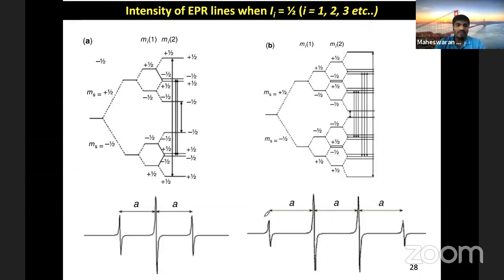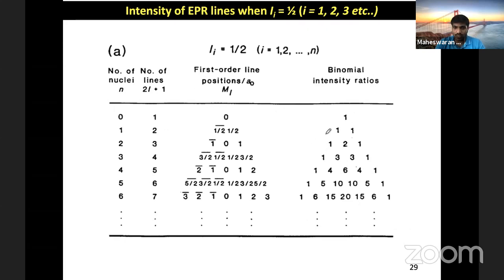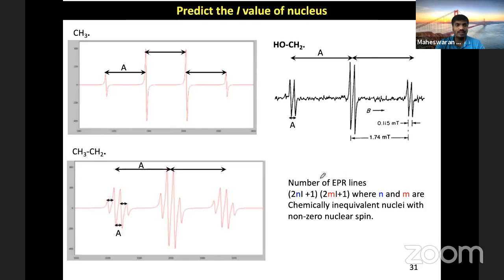If you have a second chemically equivalent nucleus, the intensity pattern changes according to Pascal's triangle. For equivalent nuclei with I = ½, you get a 1:2:1 pattern; for three equivalent protons, a 1:3:3:1 pattern. This can be calculated from the binomial triangle. For an I = 1 nucleus, a different splitting pattern is obtained.